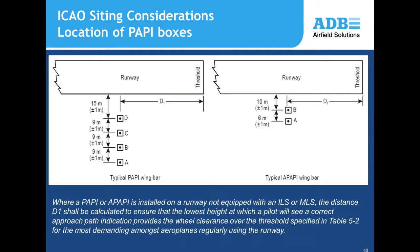The distance D1 — how far the PAPIs are mounted back from the threshold — is a calculated value based on the wheel height as the aircraft crosses over the threshold.